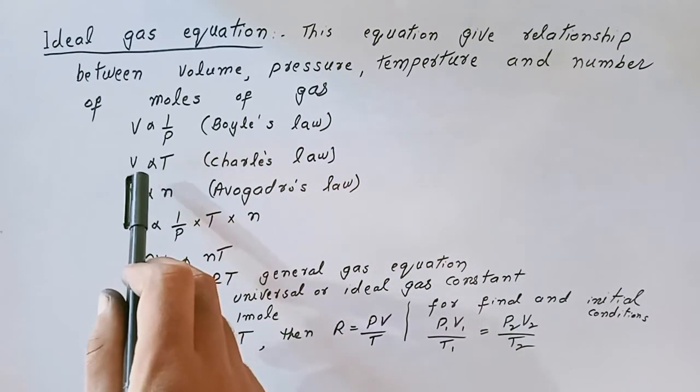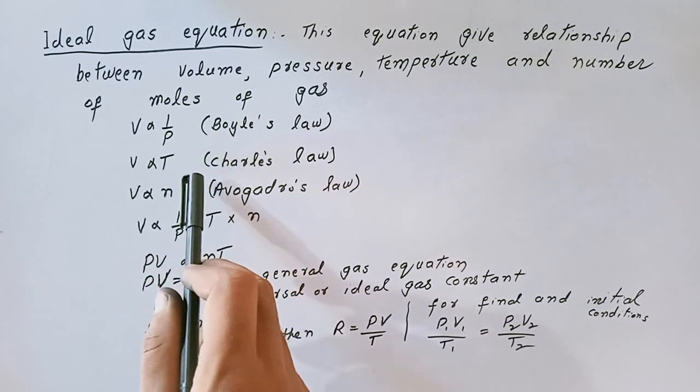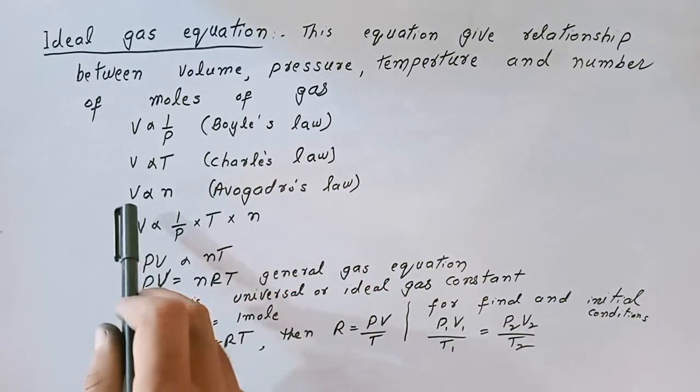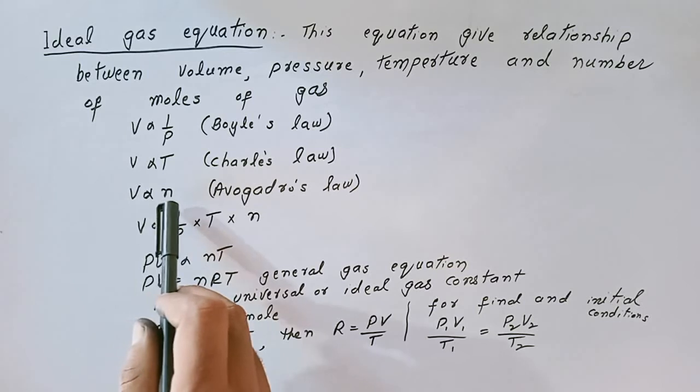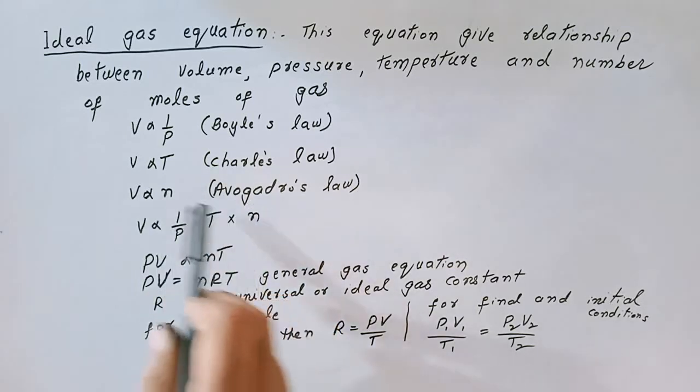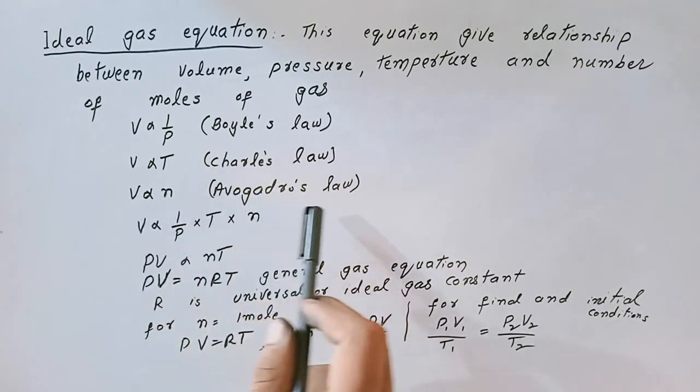Volume is directly proportional to temperature at constant pressure. This law is Charles law. Volume is directly proportional to number of moles at constant temperature and pressure. This is Avogadro's law.